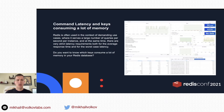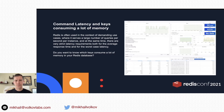Let's take a look at another panel: command latency and keys consuming a lot of memory. Redis serves a large number of queries per second, and latency is very important. You can use third-party applications, Redis Enterprise with Prometheus integration, or run the info command periodically to see information about all commands and their latency. This panel shows latency per command in graph and chart format. Also, if your latency is correlated to one of the biggest keys, you can find keys which consume a lot of memory by scanning the key space. The scanning happens in real time and can cause latency, so it's advised to use it during off-peak time.